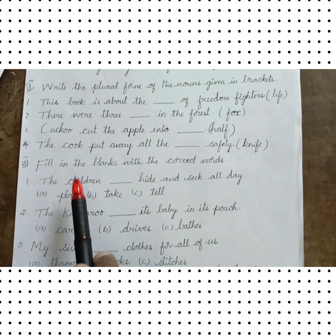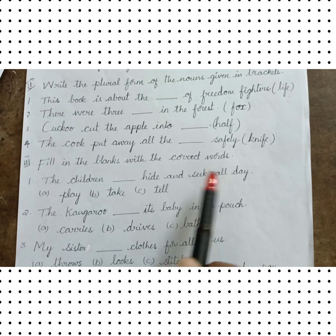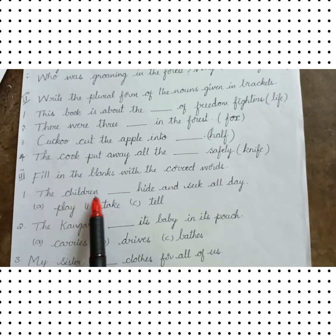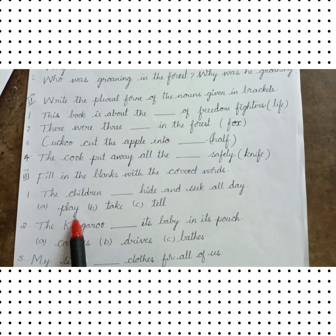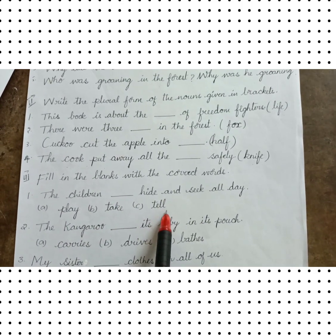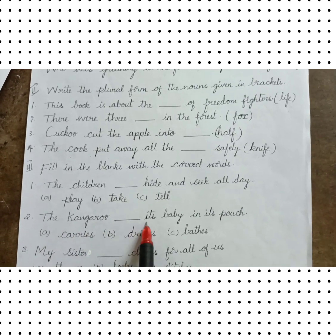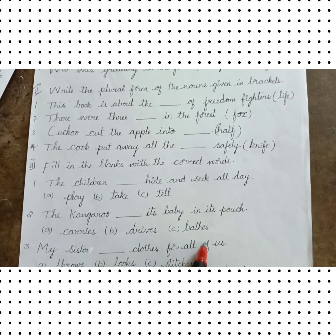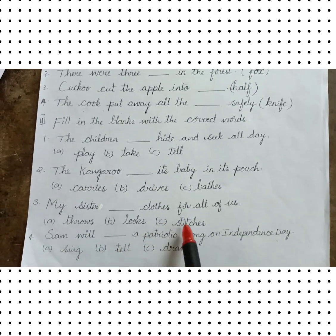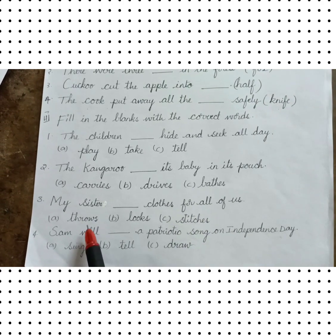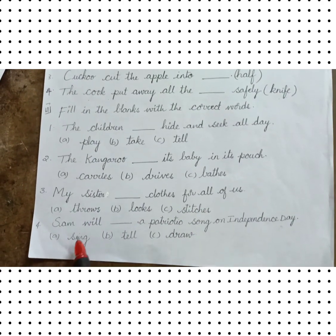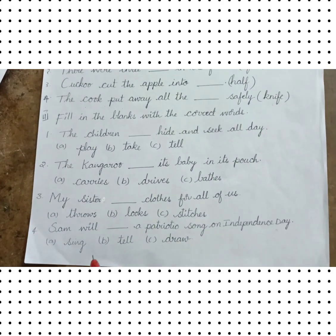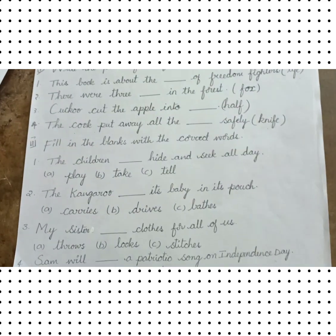Roman 3: Fill in the blanks with the correct words. The children dash hide and seek all the day — choices: play, take, tell. Second, the kangaroo dash its baby in its pouch — choices: carries, drives, waits. My sister dash clothes for all of us — choices: throws, looks, stitches. Sam will dash a patriotic song on Independence Day — choices: sing, tell, draw.